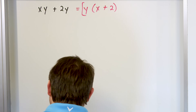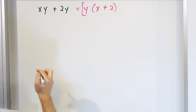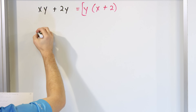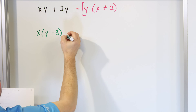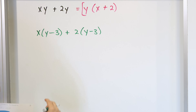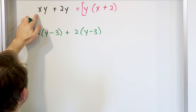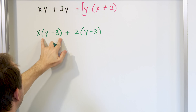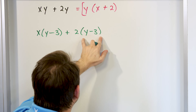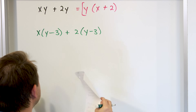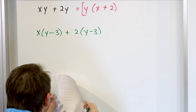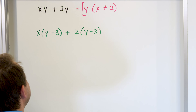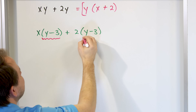Now I want to move into what factoring by grouping really is. What if instead of x·y + 2·y, we have x times (y minus 3) plus 2 times (y minus 3)? This problem is exactly the same — x, 2, y, y — everything's the same except I've replaced y with the quantity (y - 3). The main idea of factoring by grouping: it doesn't look right now like there's much in common between these terms until you zoom out and see it's x times something and 2 times something. What's common to both is not a single variable — it's the entire quantity (y - 3).